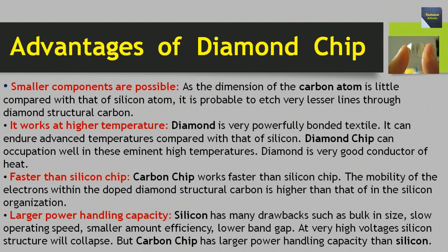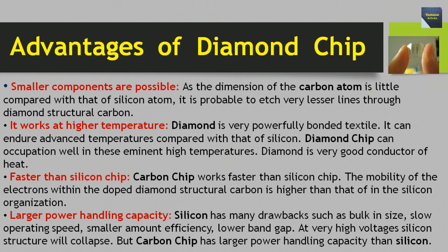Now we talk about some advantages of diamond chip. First advantage: smaller components are possible, as the dimension of the carbon atom is smaller compared with that of the silicon atom — it is possible to etch very finer lines through diamond structural carbon. Second advantage: it works at higher temperatures. Diamond is a very strongly bonded material; it can endure higher temperatures compared with silicon. Diamond chip can function well at these high temperatures, and diamond is also a very good conductor of heat.